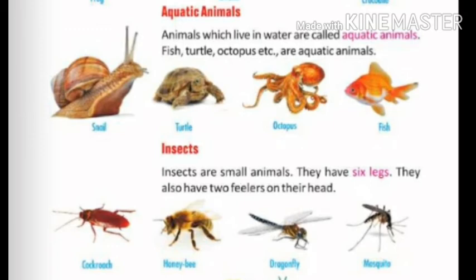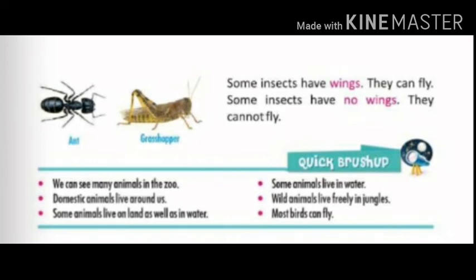The last topic is insects. Insects are small animals. They have six legs. They also have two feelers — called antennae — on their head. Some insects have eight legs, like the spider. Can you name some insects? The first one is cockroach, which we all see in our houses. Honey bee gathers and sucks honey from flowers. Then there is fly, mosquito, and dragonfly — we all see these at home.